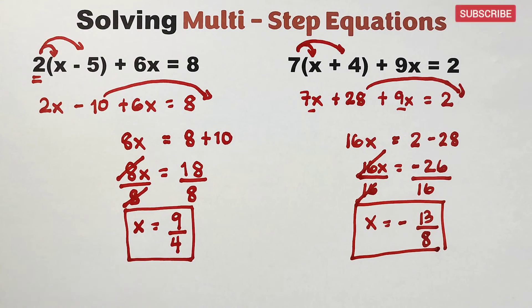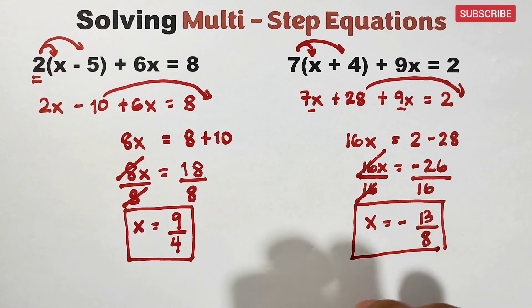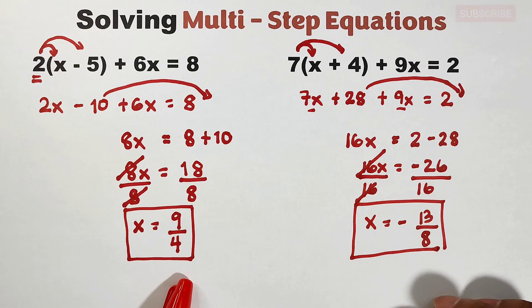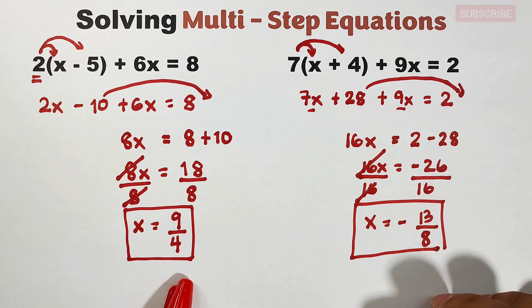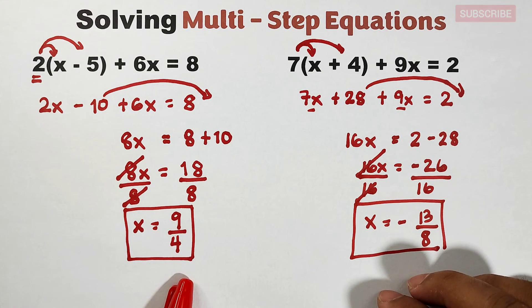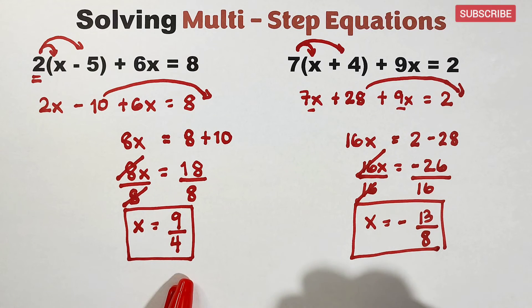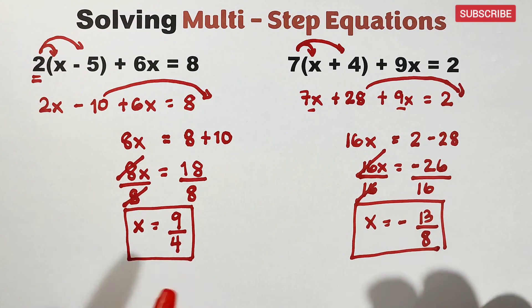Now as you can see guys, the answers in example number 1 and number 2 are both fractions or improper fractions. In other references they're converting this into decimals, but I prefer to express the final answer in lowest terms, though the answers are improper fractions. So guys, I hope you learned something from this video on how to solve multi-step equations.